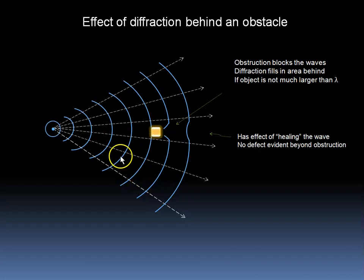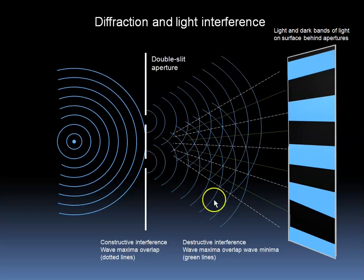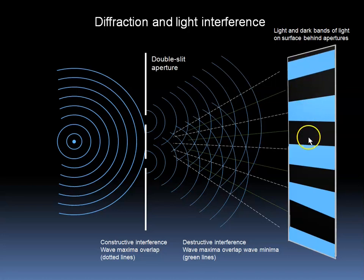A similar principle would apply to sound waves or to waves on water if the obstruction is of a size on the order of magnitude of the wavelengths. Here we see a light wave encountering two apertures. Each aperture creates its own new set of wave fronts of light. And in some areas these wave fronts overlap, in which case we get constructive interference. In some areas, the trough of one set of waves overlaps the peak of the other, and we get destructive interference. In this way, we get a series of bands of light and dark behind this double slit aperture setup. This is not what we would expect using the particle model of light, but is easily understood using the wave front model.